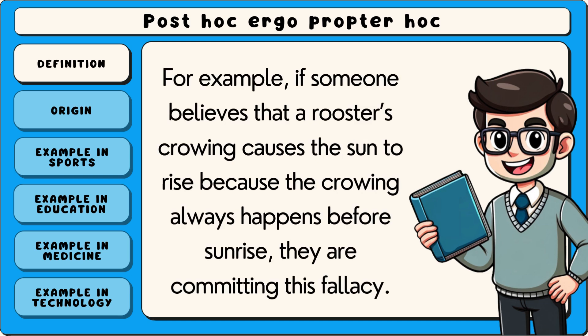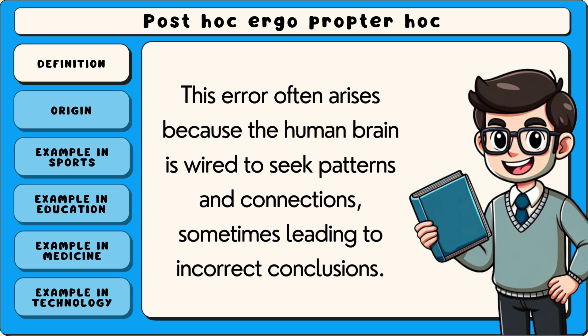For example, if someone believes that a rooster's crowing causes the sun to rise because the crowing always happens before sunrise, they are committing this fallacy. This error often arises because the human brain is wired to seek patterns and connections, sometimes leading to incorrect conclusions.